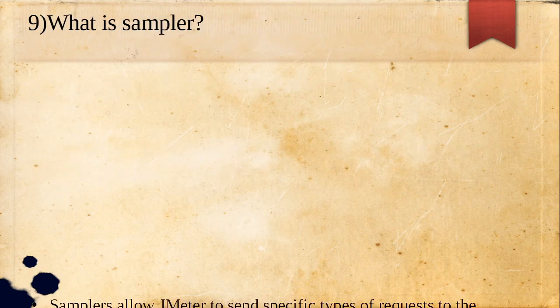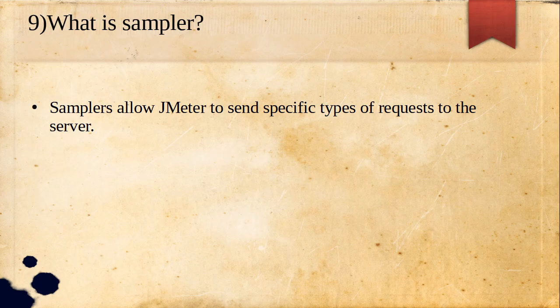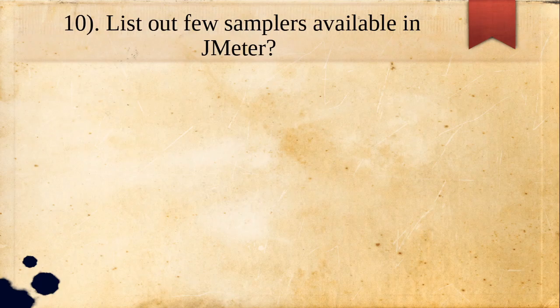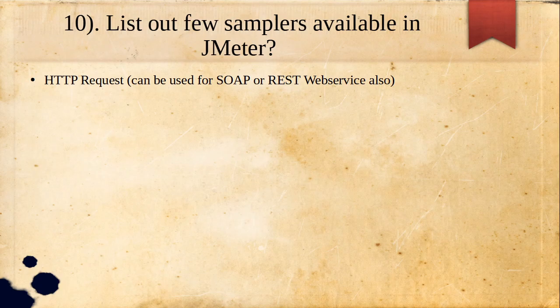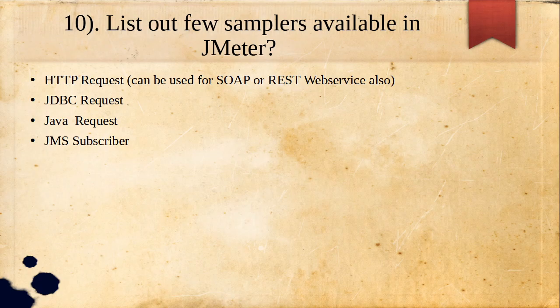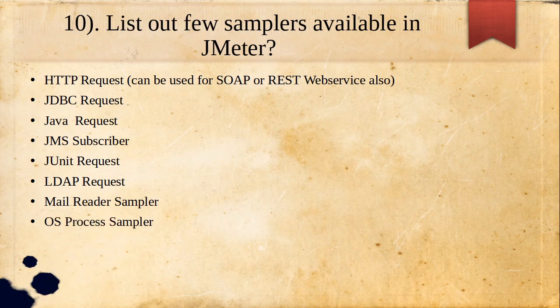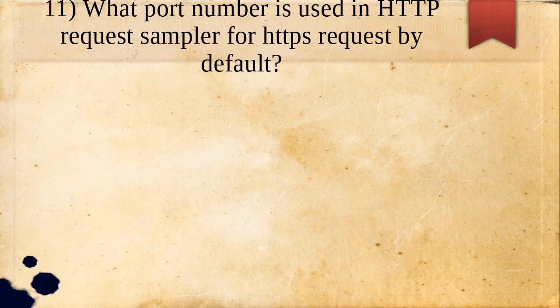Ninth question: what is a sampler? Samplers allow JMeter to send specific types of requests to the server. Some samplers available in JMeter include HTTP Request (the most common), JDBC Request, Java Request, JMS Subscriber, JUnit Request, LDAP Request, Mail Reader Sampler, OS Process Sampler, and TCP Sampler.